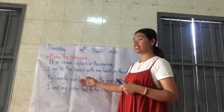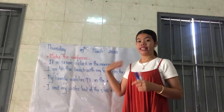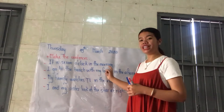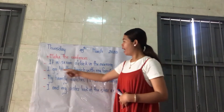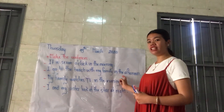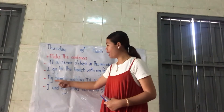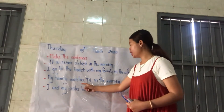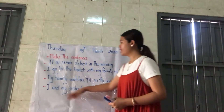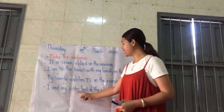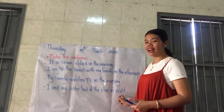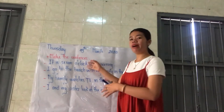Here's just my example of the sentence. It is six o'clock in the morning. I go to the beach with my family in the afternoon. My family watches TV in the evening. I and my sister look at the stars at night. So this is just my sentence.